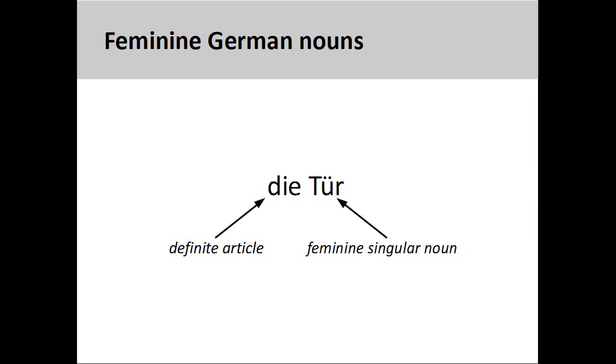The German noun 'Tür,' meaning 'door,' has a feminine grammatical gender, so its definite article is 'die.'